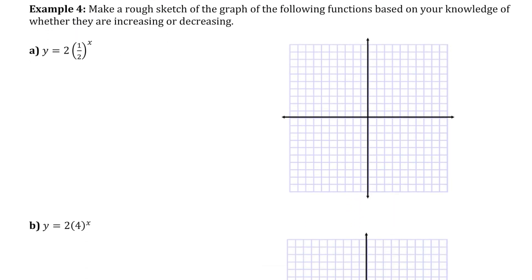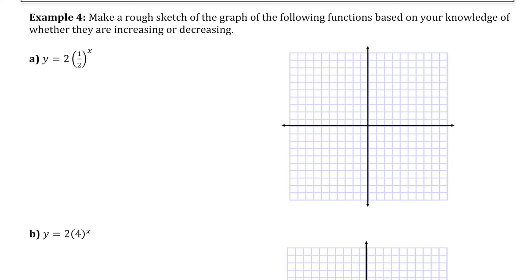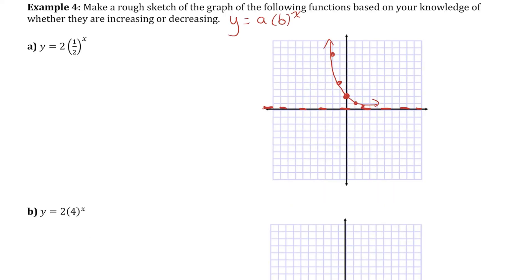Let's look at some examples with numbers and do rough sketches to figure out if these are increasing or decreasing functions — we won't make a table of values, we'll just do a rough sketch. These are all in the format y equals a times b to the x. The a value is the y-intercept and b tells us what the initial value is repeatedly being multiplied by. For my first function, my initial value is two — plot a point on the y axis at two. That y value of two is repeatedly being cut in half as I move to the right. As I move to the left it doubles. This is a decreasing function — as x gets bigger the y values get smaller.